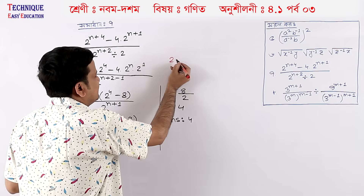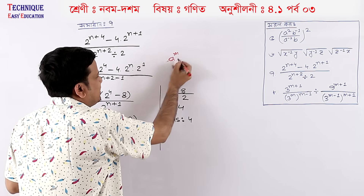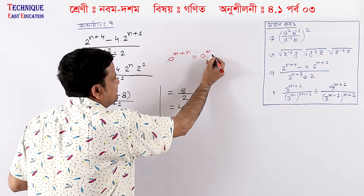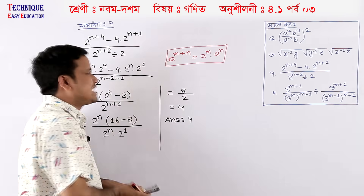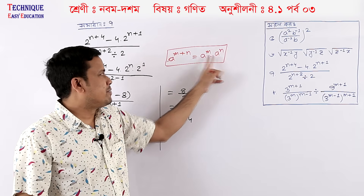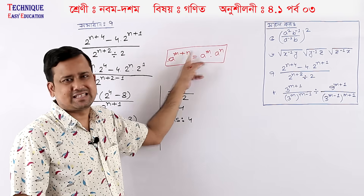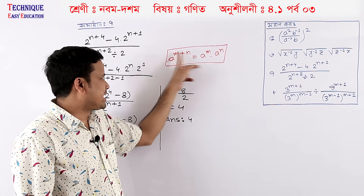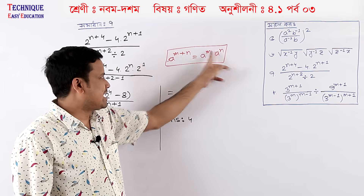a to the power m plus n. First, write a to the power m into a to the power n. If both have the same base, we double the power — m to n, multiply the power n. We shuffle the power; the current number of m is equal to a to the power n.